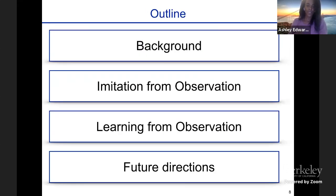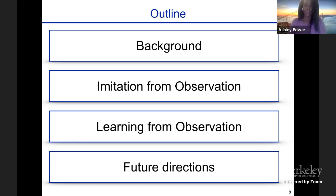During this talk, I'm going to focus on the latter two points: how agents can imitate from observation, and how they can learn from observations and perform better than their demonstrators. I do think cross-domain learning is also important and I've done some work in that area. The outline is: I'll start with background, then describe my work on imitation from observation, then learning from observation, and finally future directions.